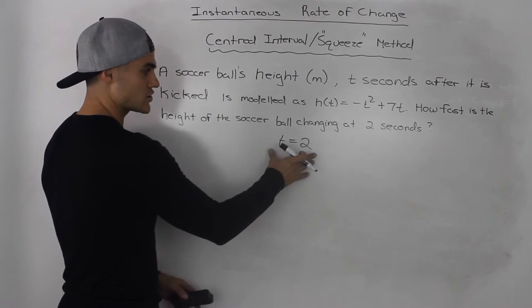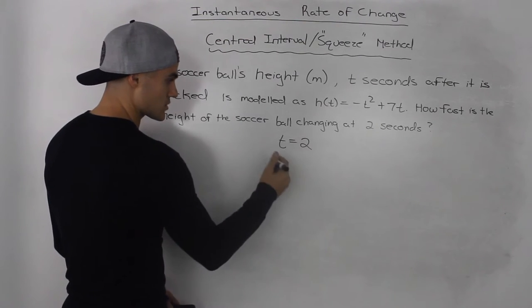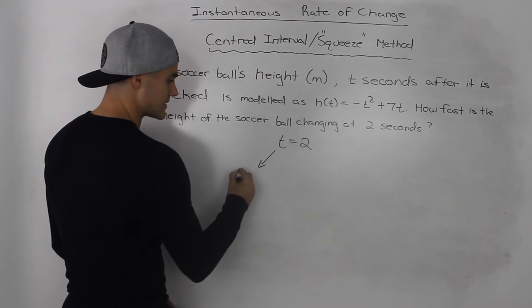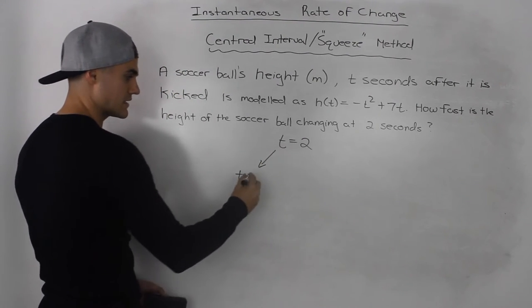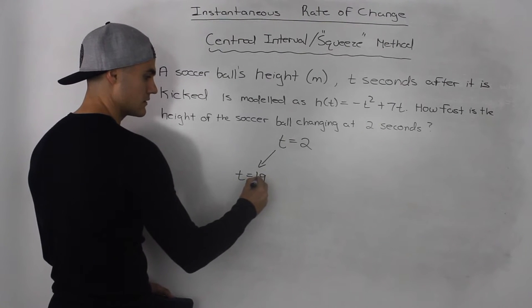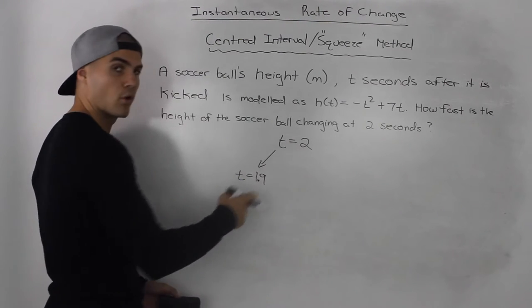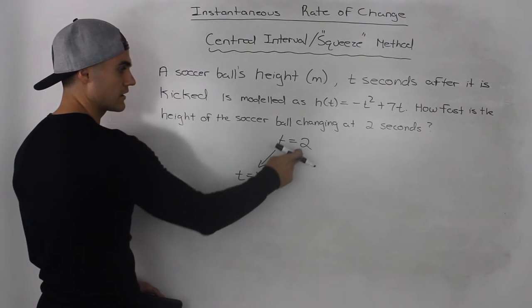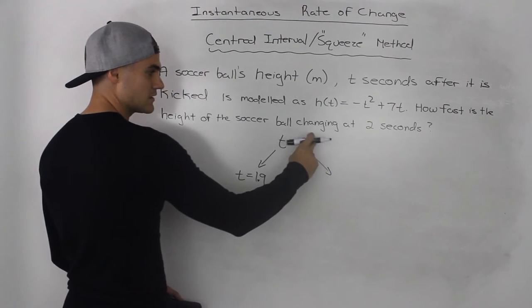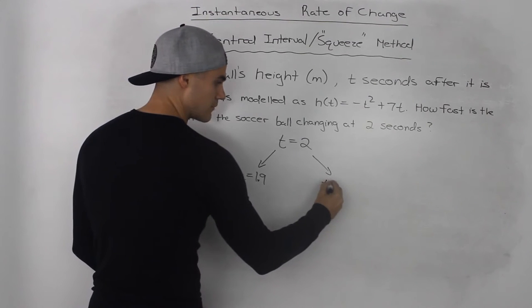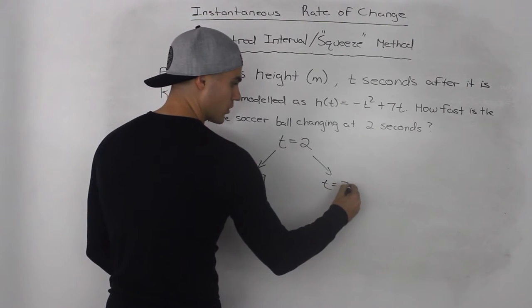They want the instantaneous rate of change at a time of 2 seconds. So what we do is we pick a time that is close to 2 seconds but less than it. There's a difference of 0.1 between 1.9 and 2. And then we have to use that same difference and add it to 2 to get another time that's greater than 2, so 2.1.